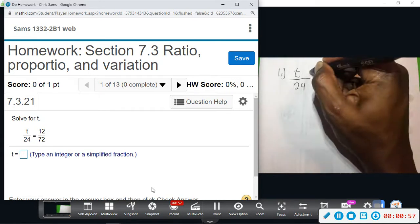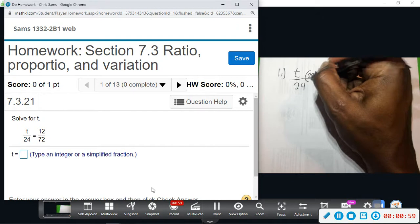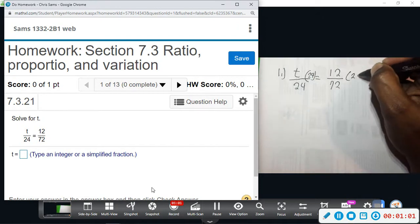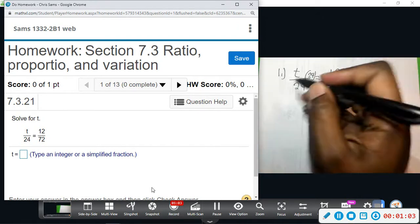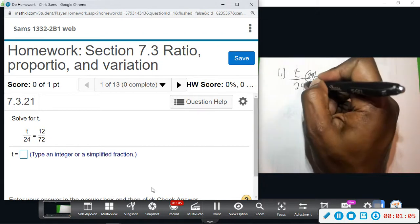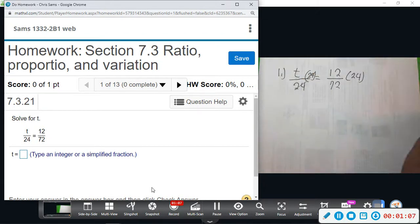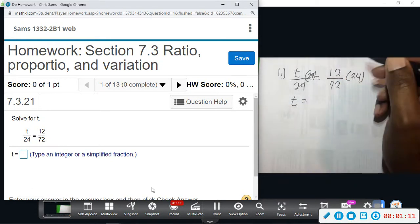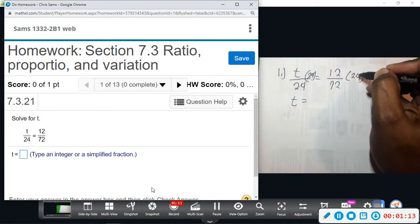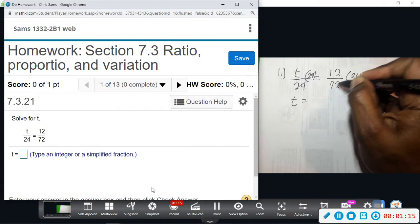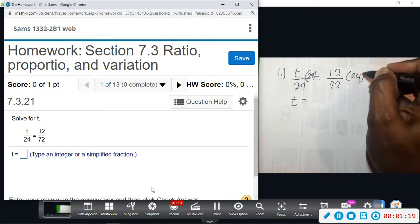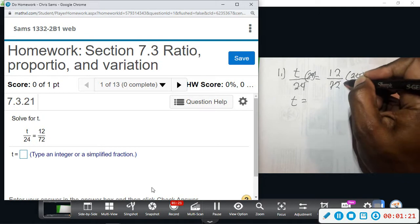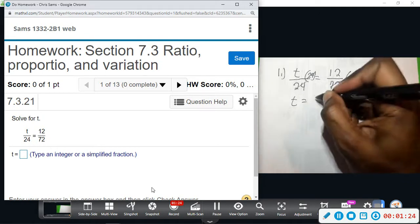But here we just have to multiply by 24. So I'm going to add 24 here, and whatever you do to one side you do to the other. 24 divided by 24 will be gone, so now t equals whatever we have. Now 24 and 72 are factors of each other, so you can divide this by 24. This will become three. So now we have 12 divided by three.